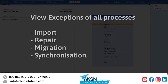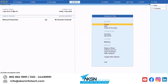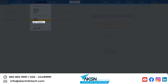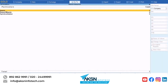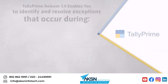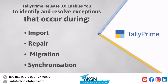You can view a report that consists of all processes — import, repair, migration, and synchronization — which gives a complete view of exceptions that are pending to be resolved for the respective activities. Press Alt+Y, then All Exceptions, and press Enter. Drill down to the respective activities to view the exceptions. As you saw, TallyPrime Release 3.0 eases data management as you can easily identify and resolve exceptions that occur during import, repair, migration, and synchronization.